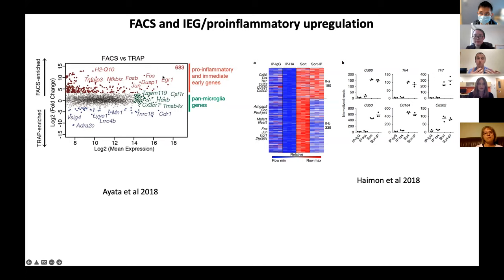While we do regularly FACS sort for microglial isolations, we also use another technique we believe may be more gentle in particular instances: magnetic bead-based column enrichment for microglia. That is the protocol I'm going to walk through today.